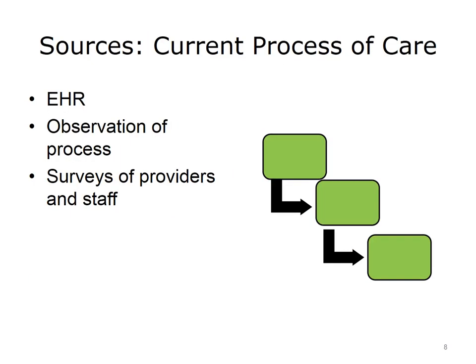In the days before most healthcare providers were using EHRs, getting information on the process and outcomes of care required very labor-intensive chart review. With much of the data now in electronic form, and especially with the use of data warehouses optimized for queries across multiple patients, data to identify current processes and outcomes can be more easily obtained. However, to get usable data will require good analytics staff, as well as strategies to mine clinical notes that may be in text format rather than formats that are more easily queried.